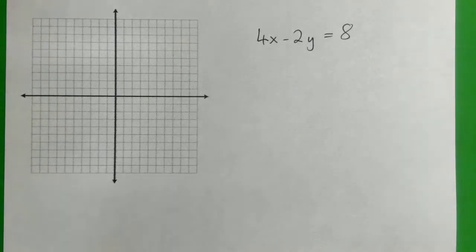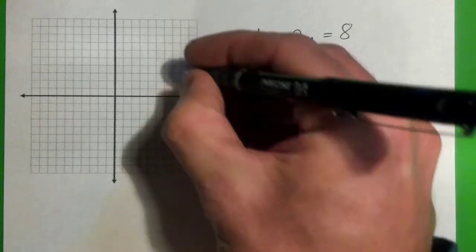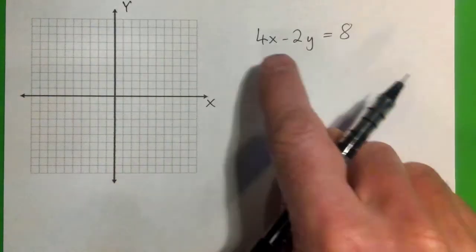All righty, so we're going to find the x and y-intercepts and then graph the equation. So I've got a little graph. Here's my x-axis, my y-axis. This is the equation.